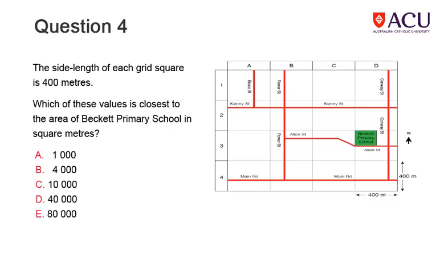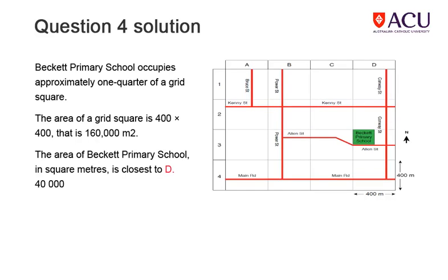Read the information and study carefully the same street map showing the location of Beckett Primary School. There are two ways to work this out. One way is to calculate the area of a grid square, then divide it by 4. Another way is to estimate both the length and the width of the school block to be about 200 metres, and then multiplying 200 by 200 gives an area of 40,000 square metres.